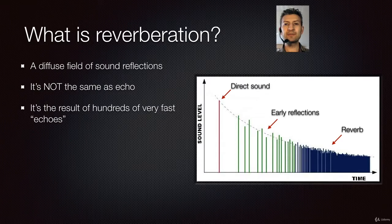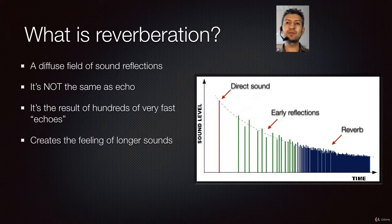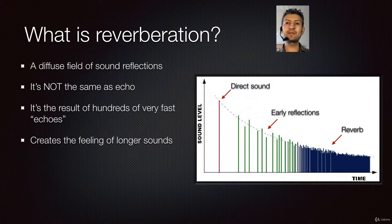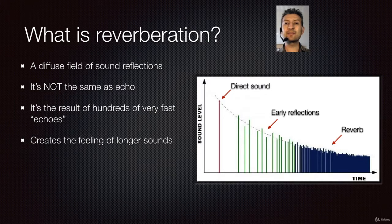When we listen to sounds in a room with reverb, it creates the sensation of longer sounds. So reverb is related to the decay of sounds. Some musical instruments, like the violin or a flute, really need a good amount of reverb to sound better. That's why music halls are created with long reverbs, but movie theaters are not. It all depends on what kind of music or material you are working with.